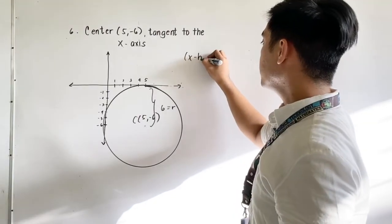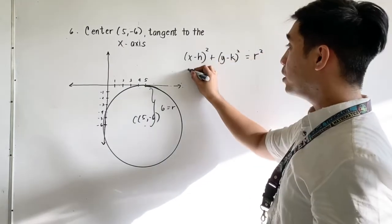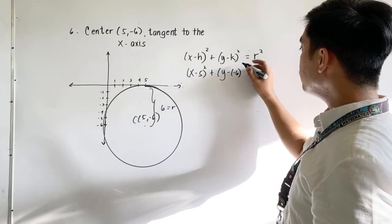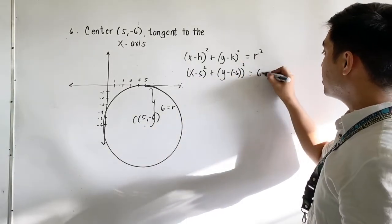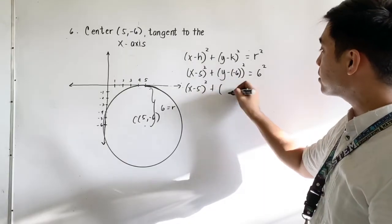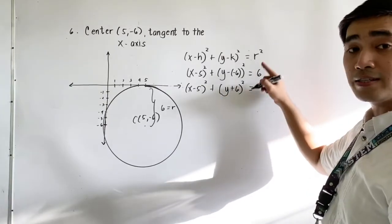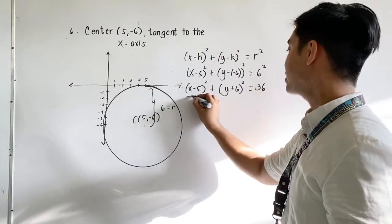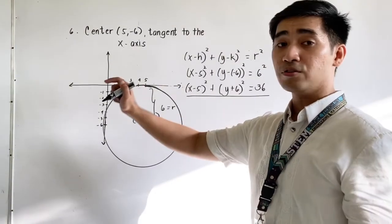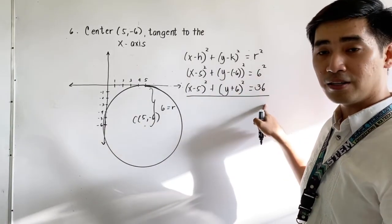Substituting using the formula x minus h quantity squared plus y minus k quantity squared is equal to r squared, we get x minus 5 quantity squared plus y minus negative 6 quantity squared is equal to r squared. Our r is equal to 6, that becomes 6 squared. Simplifying, x minus 5 quantity squared plus y plus 6 quantity squared is equal to 36. Therefore, the standard equation of the circle having center at 5 and negative 6 and tangent to the x-axis is (x − 5)² + (y + 6)² = 36.